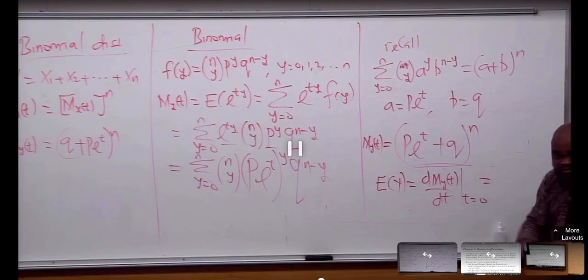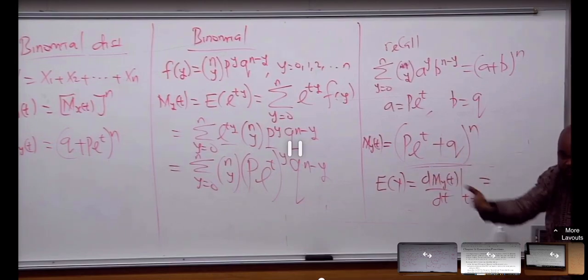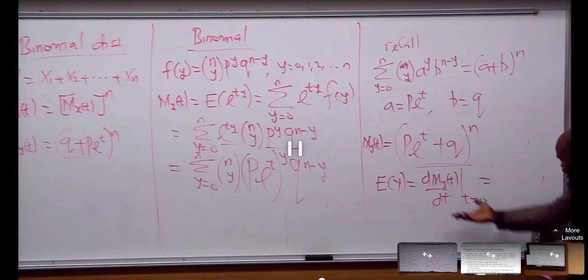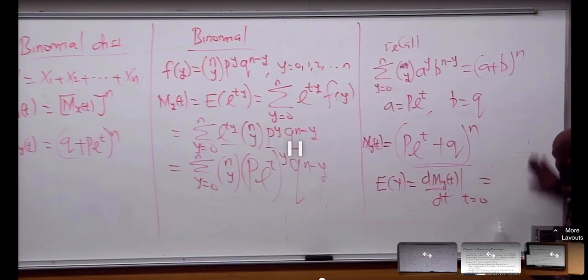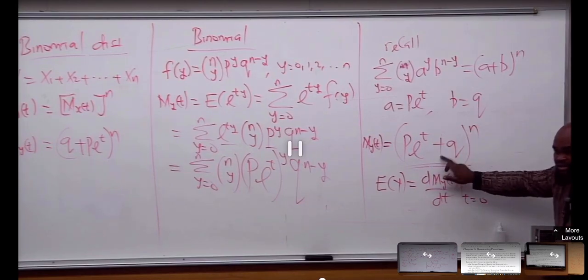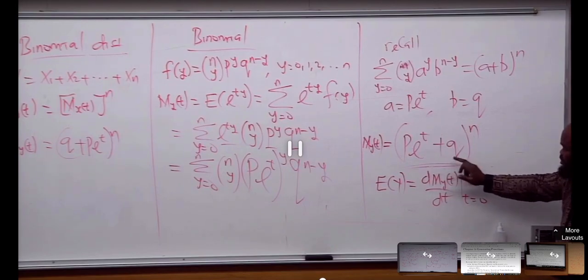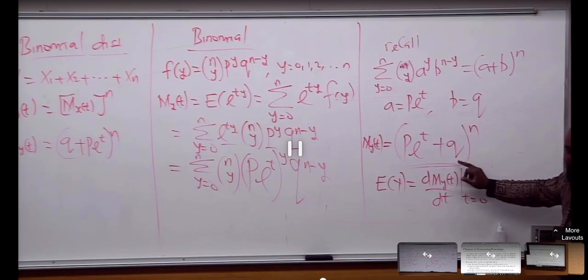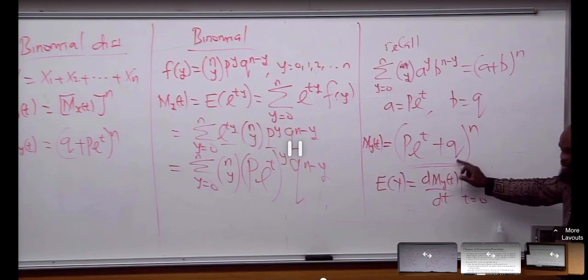We all know the mean. The other time, we derived the mean of binomial, right? It's np, right? Let's differentiate this. You have to go — if I were you, you have to revise your knowledge of calculus.